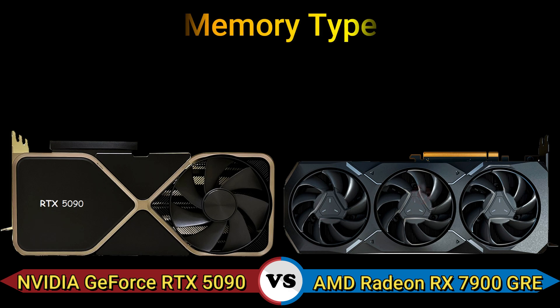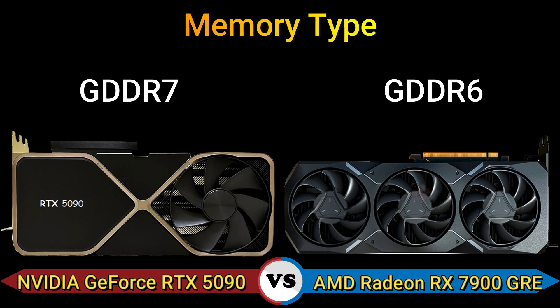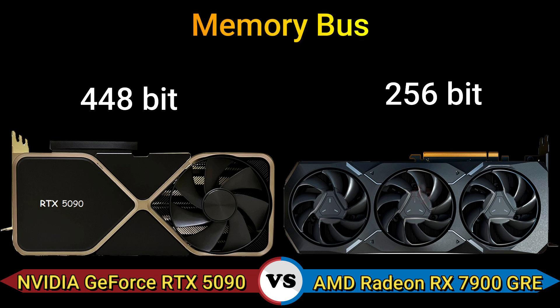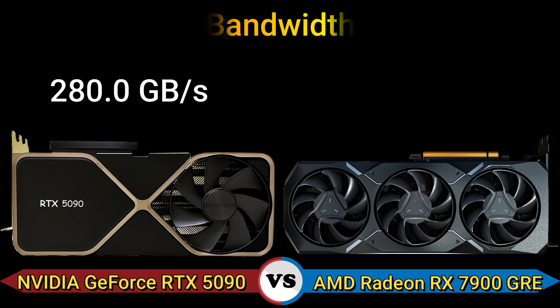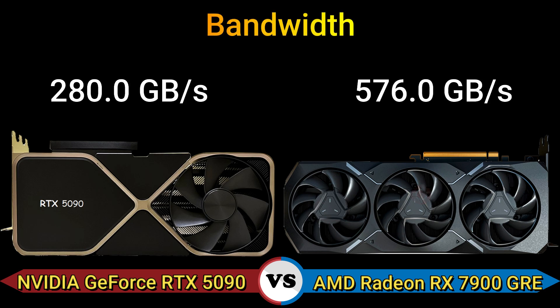Memory type: GDDR7 and GDDR6. Memory bus: 448-bit and 256-bit. Bandwidth: 280.0 GB/s and 576.0 GB/s.